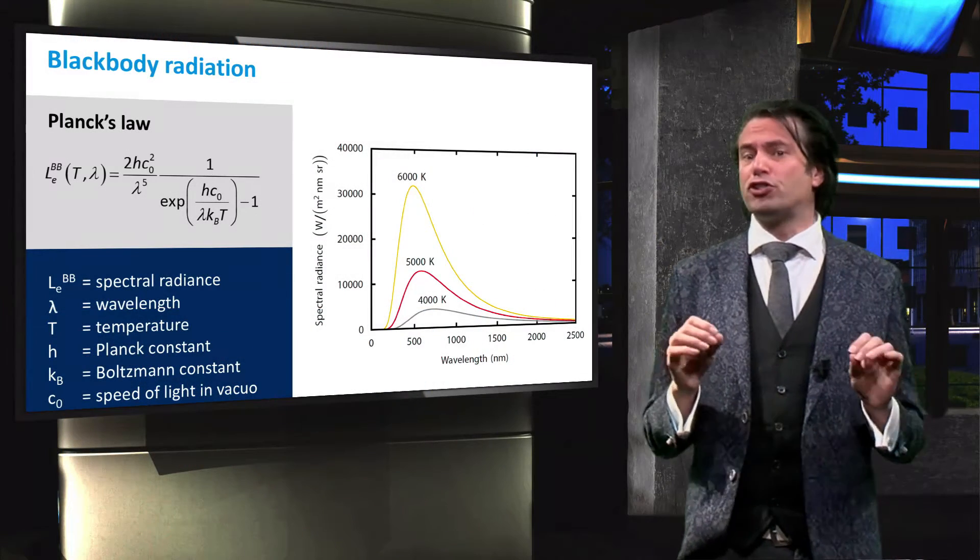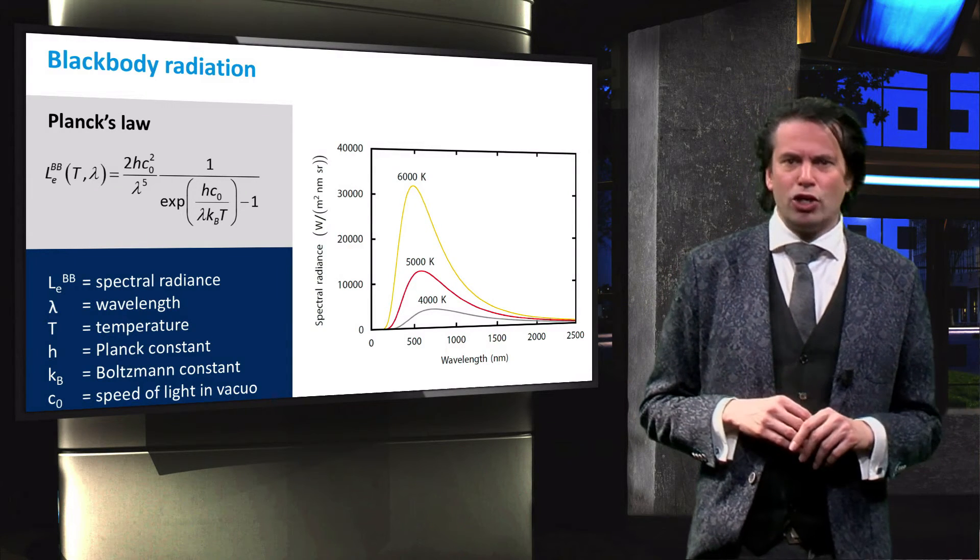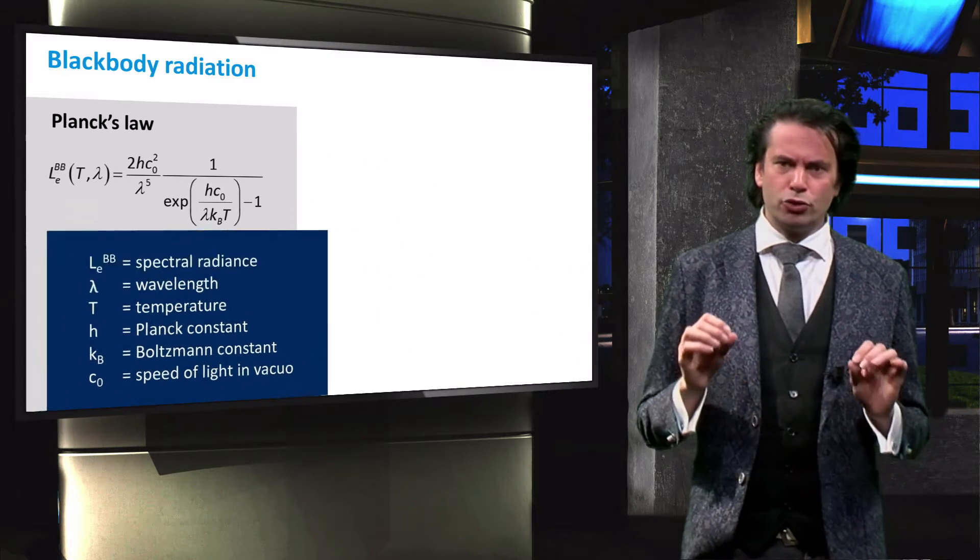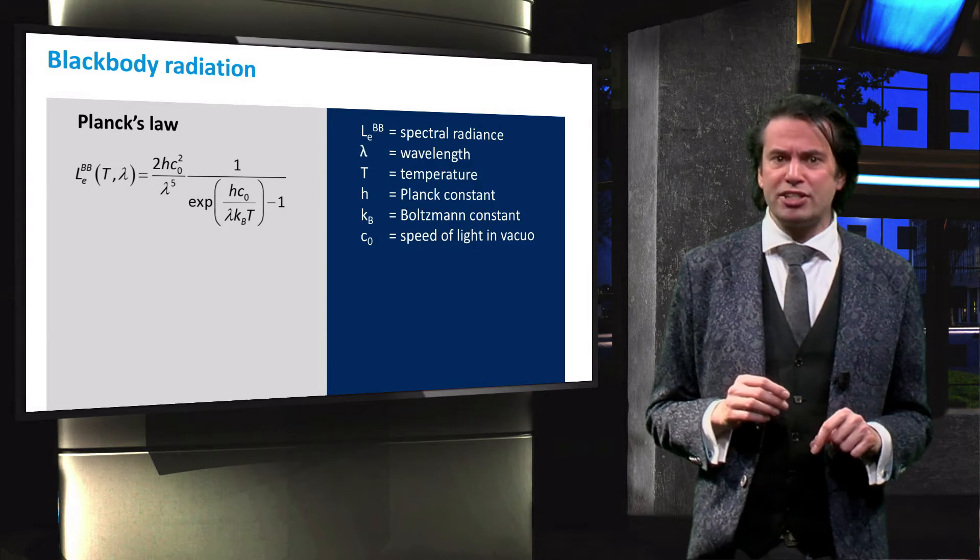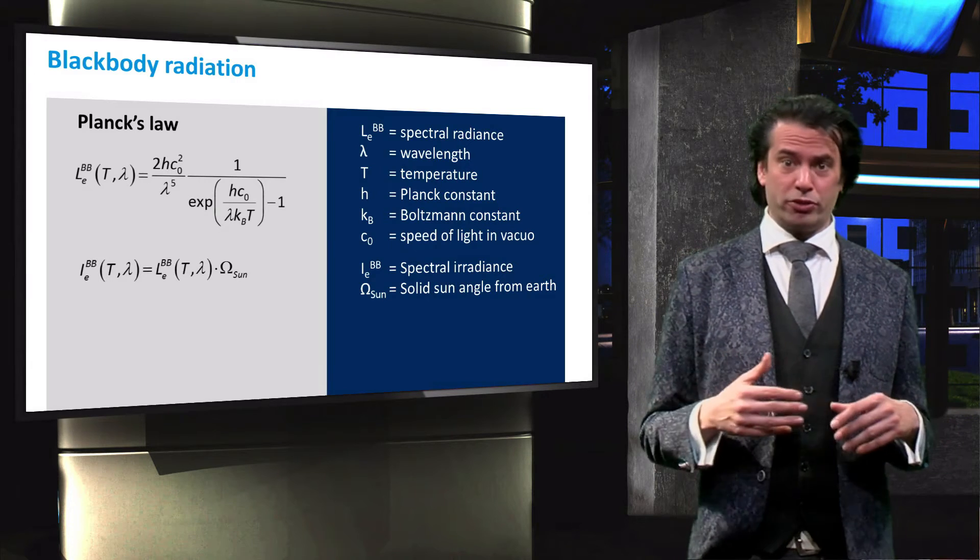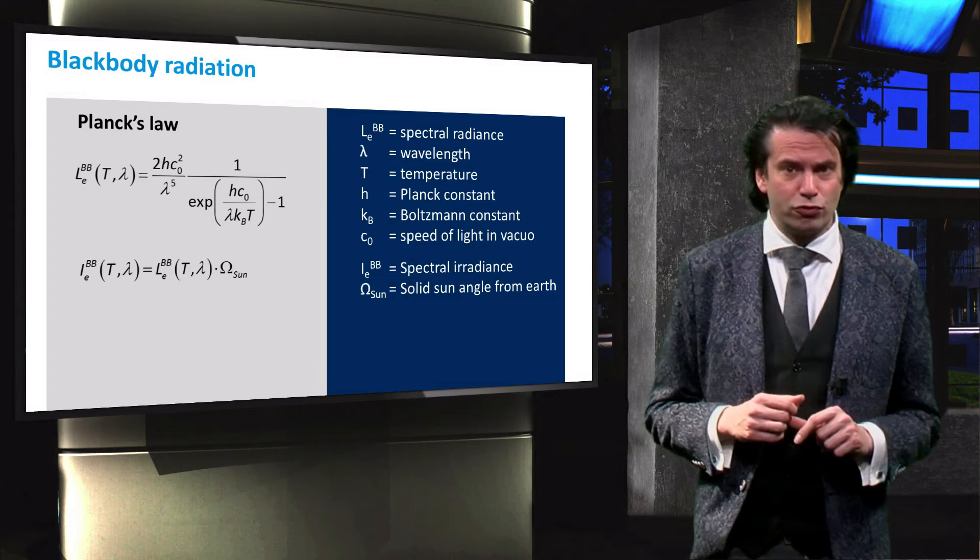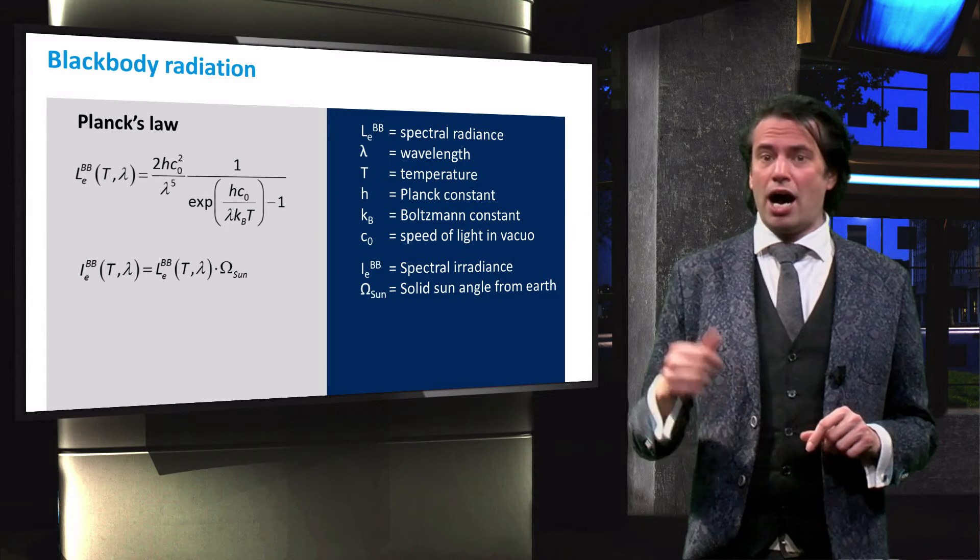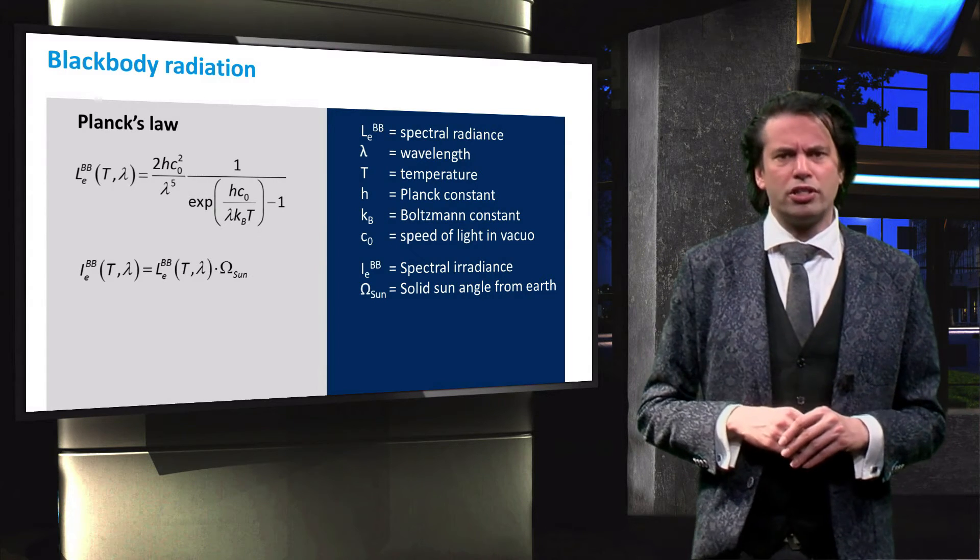The surface of the Sun has a temperature of roughly 6000 Kelvin, so the spectral radiance of our Sun follows the yellow line. To calculate the radiance a black body with the size and position of the Sun would have on Earth, we have to multiply the spectral radiance with the solid angle of the Sun as seen from Earth. This is best described by the shown equation where I is the irradiance and omega Sun is the solid Sun angle.